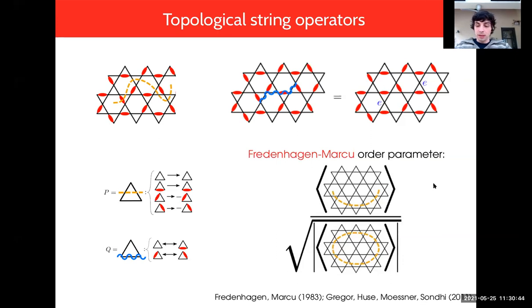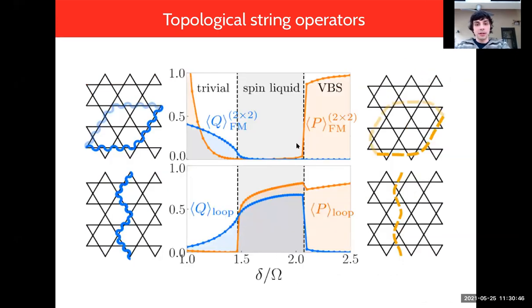This was originally developed in the context of lattice gauge theory. Basically measuring this particular order parameter, it's predicted to be tending to zero in a deconfined phase and tends to a non-zero value otherwise. We checked this in our numerics. We're plotting this Fredenhagen-Marcu FM string order for both types of strings, and we see that the spin liquid indeed decays to zero whereas in the neighboring non-topological phases it has a non-zero value.